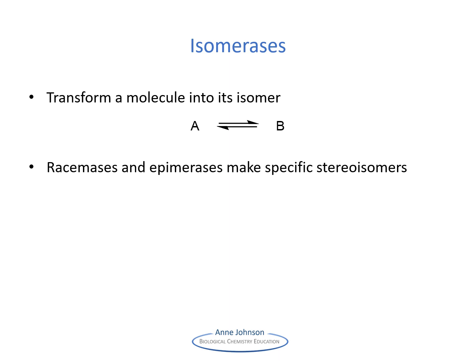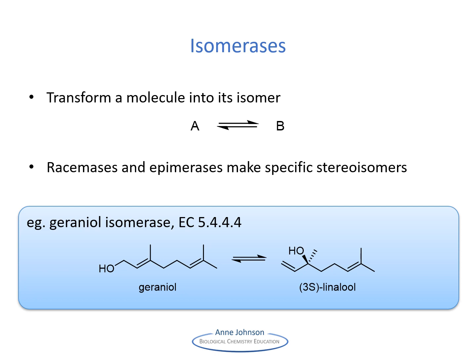Isomerases catalyze interconversions of isomers — these could be structural isomers or stereoisomers. In the case of the latter, it is common to call the enzymes racemases or epimerases depending on the conversion that occurs. Geraniol isomerase catalyzes the isomerization of geraniol into (3S)-linalool, involving the transfer of the hydroxyl group from carbon-1 to carbon-3 and concomitant relocation of the alkene bond.